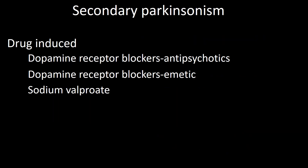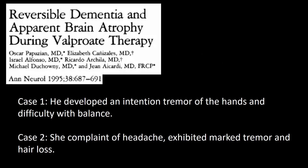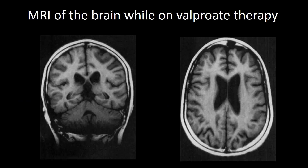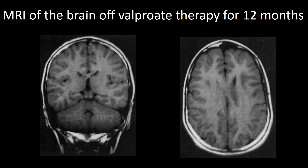Secondary Parkinsonism can occur in patients taking valproic acid. Two children we saw, while on valproic acid for seizures, developed tremor suggestive of Parkinsonism and dementia. MRI showed enlarged ventricles and sulci while on medication, which normalized 12 months after valproic acid was stopped. Hence, it is important in patients with drug-induced Parkinsonism to stop medication before changes become irreversible.